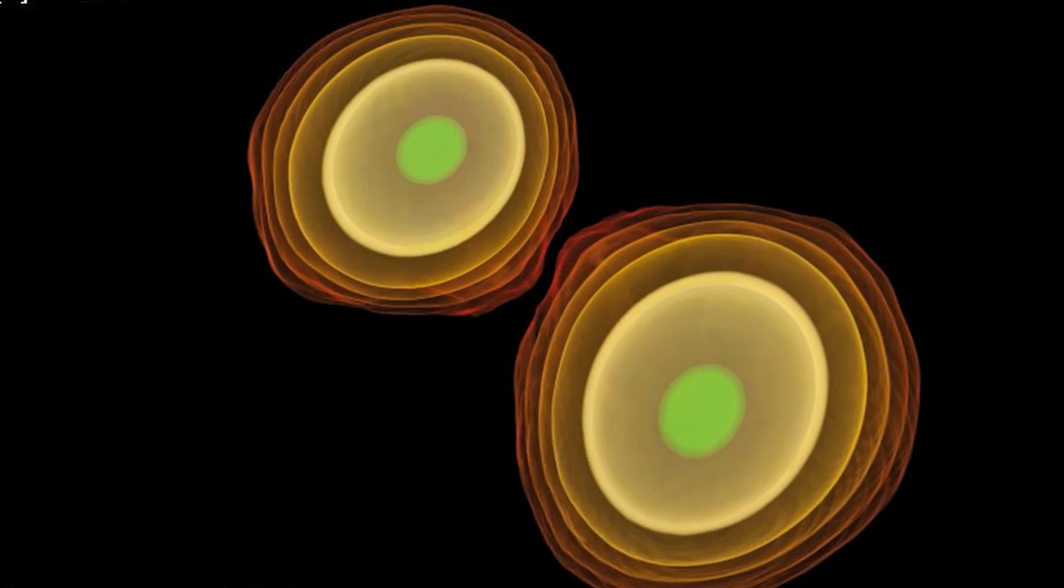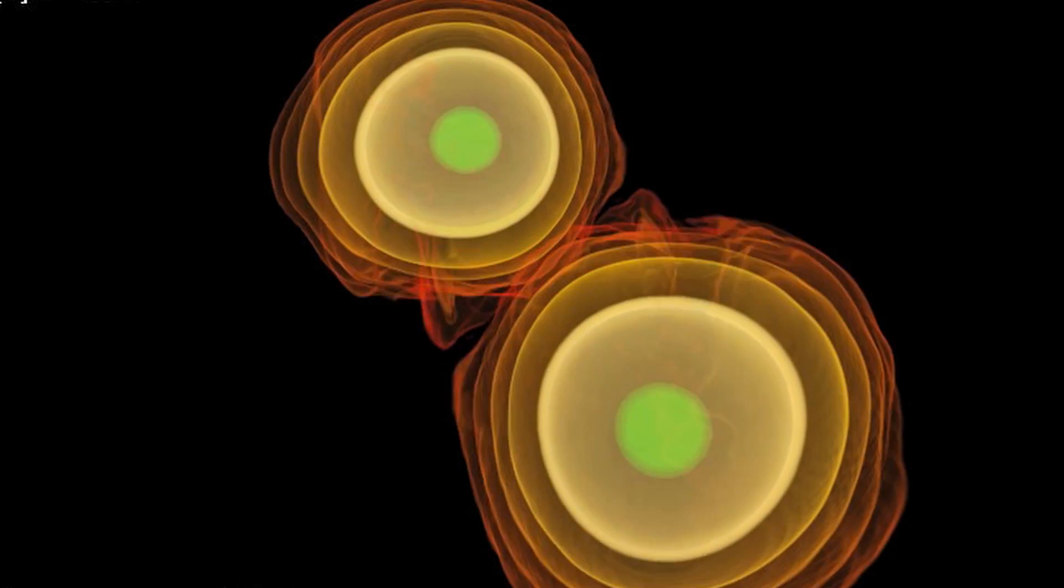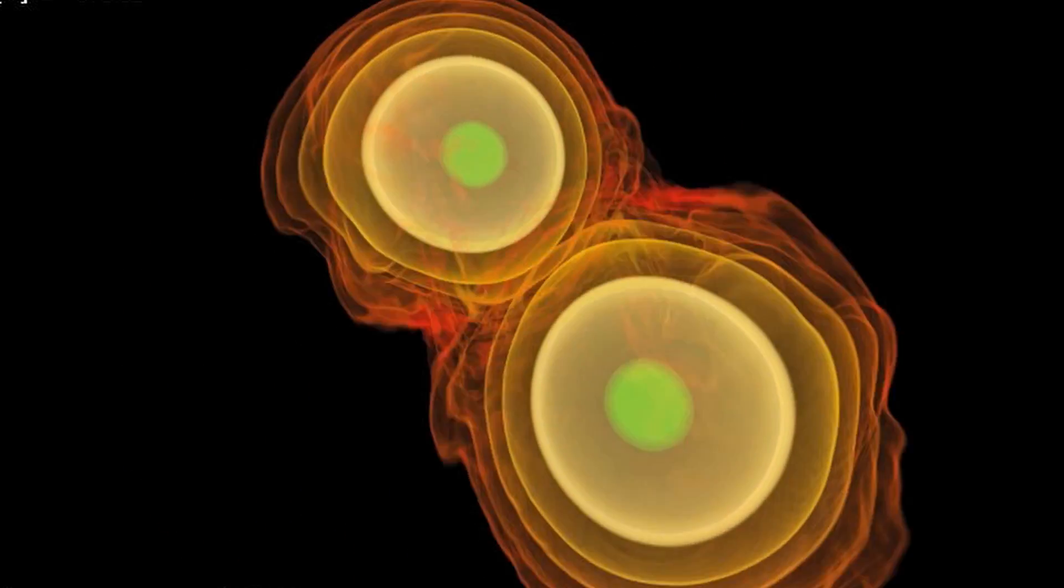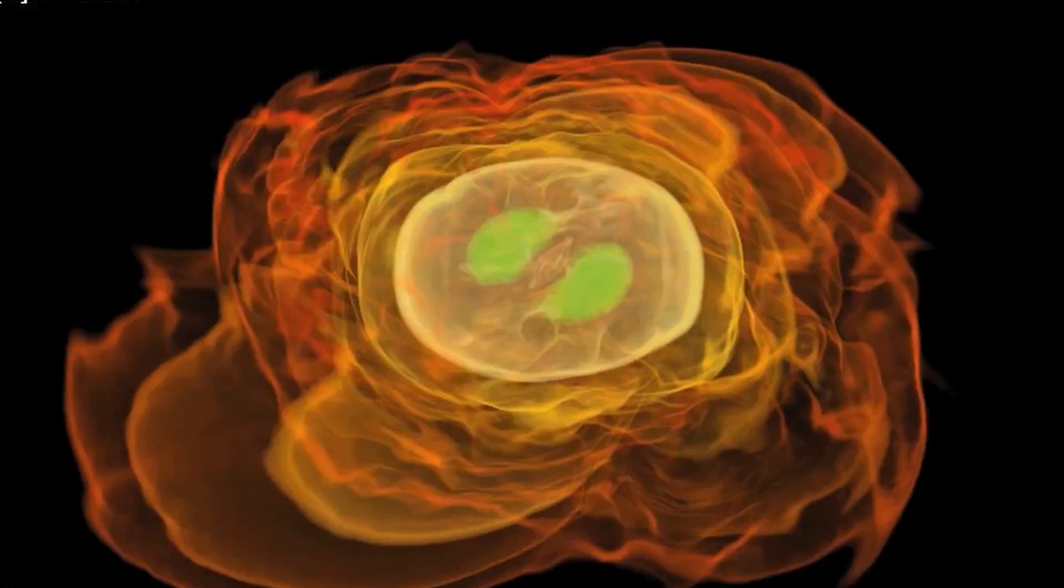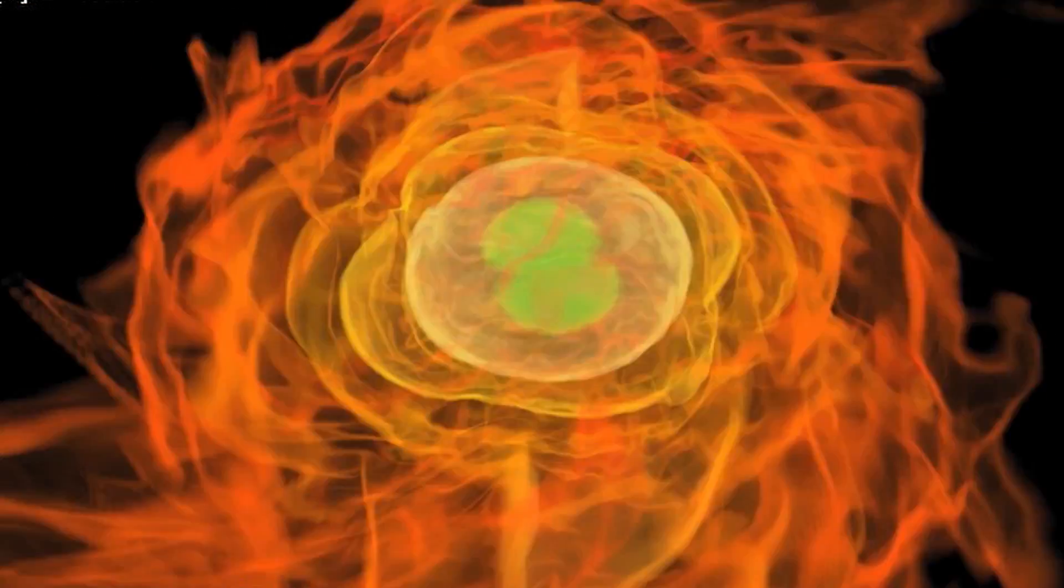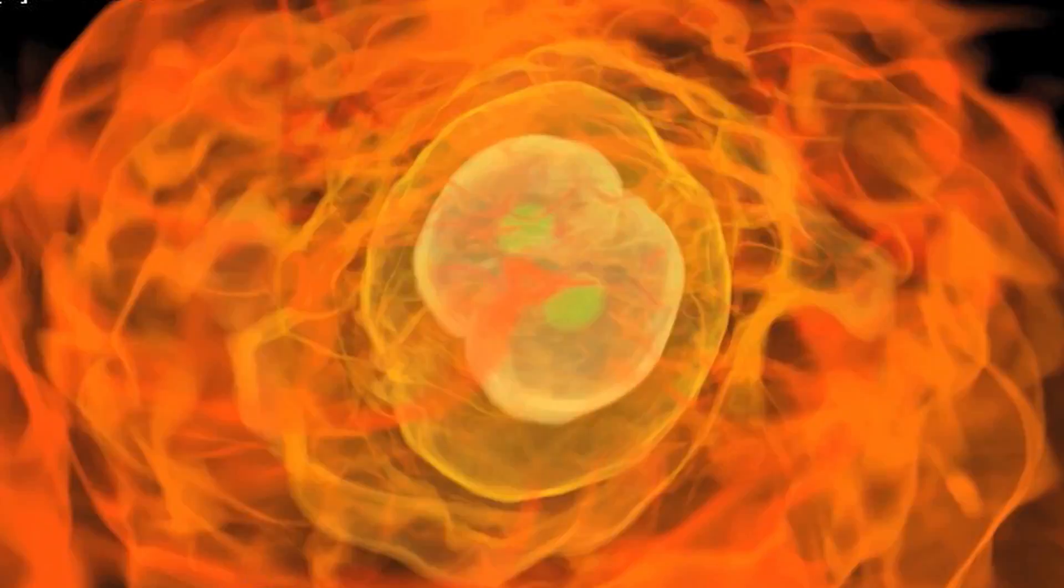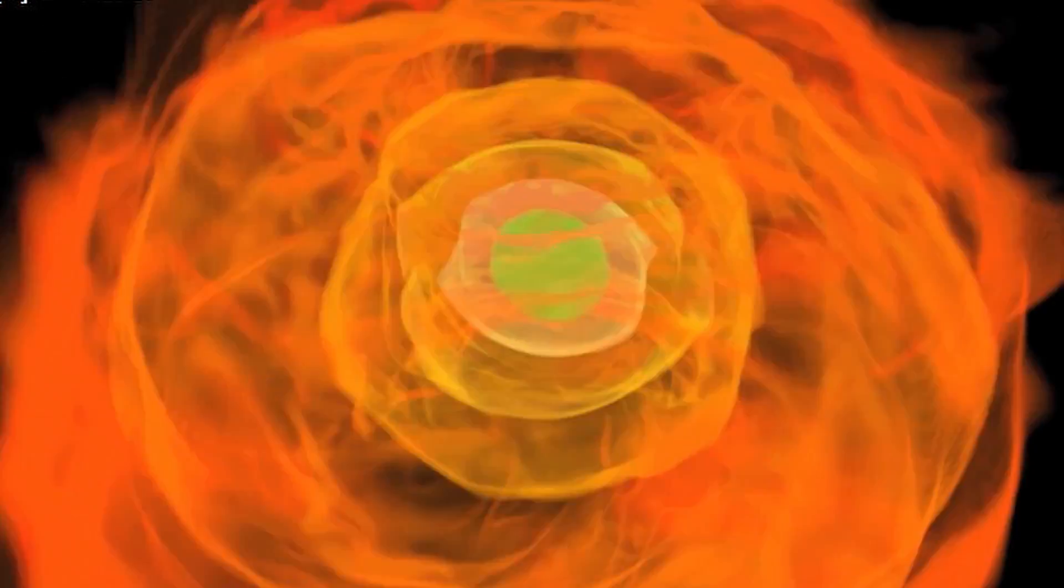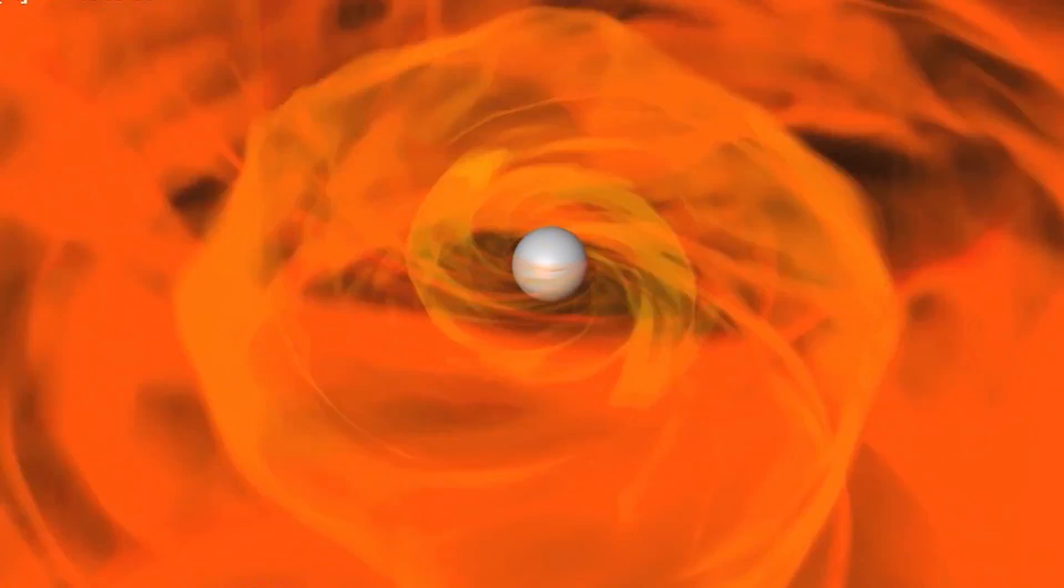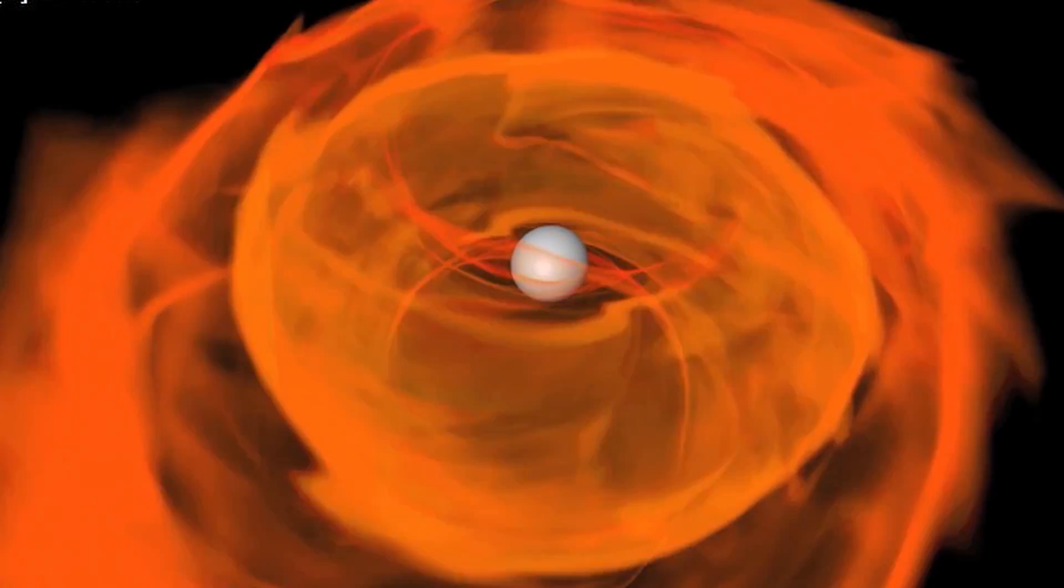Something they have in common though is that they don't just deform the space-time. They can also set it in rotation. If you are a little object in a tornado, you cannot stand still. You will have to turn together with the tornado. And here is not a tornado but it's the whole space-time that is rotating because of the presence of the black hole.